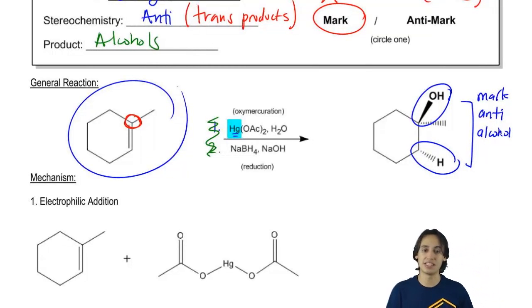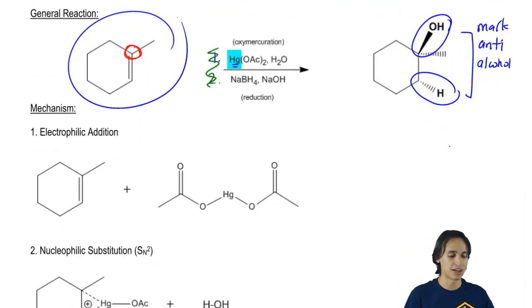Does that make sense? Because basically it's Markovnikov because it went to the most stable location. It's anti because my H and the OH that I added are trans to each other and it's an alcohol. So even if you didn't know the full mechanism, you could still predict the products just based on these facts. But obviously we need to know the mechanism. So let's go ahead and get started with that.